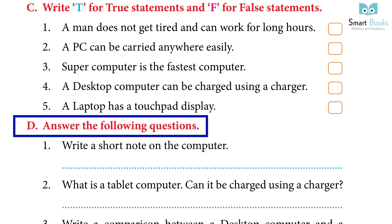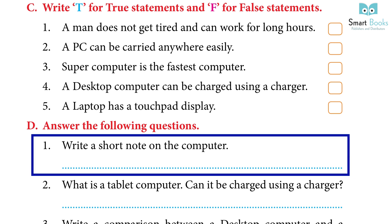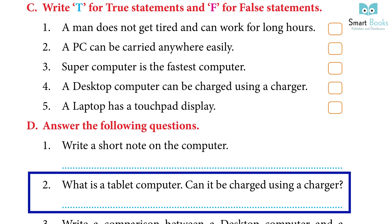Activity D: answer the following questions. Question 1: write a short note on the computer. Answer: a computer is an electronically operated machine that helps us to do various tasks; a computer can complete any task very quickly and efficiently. Question 2: what is a tablet computer? Can it be charged using a charger? Answer: a tablet computer is a flat, thin computer whose size is smaller than a laptop. It has a touchpad instead of a mouse; you can use your fingers' motion to work on it. It is powered by a battery that can be recharged by a charger and can be easily replaced.